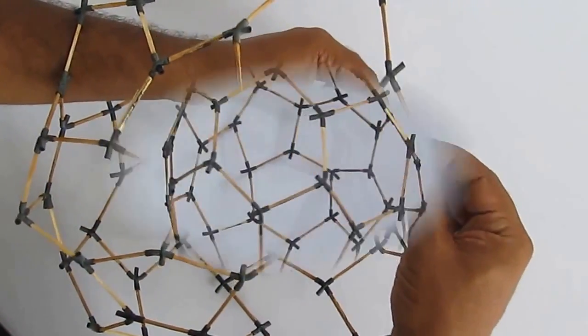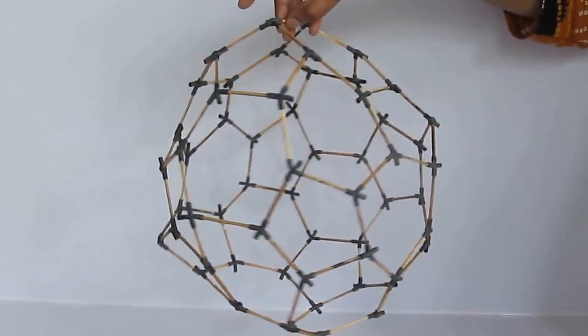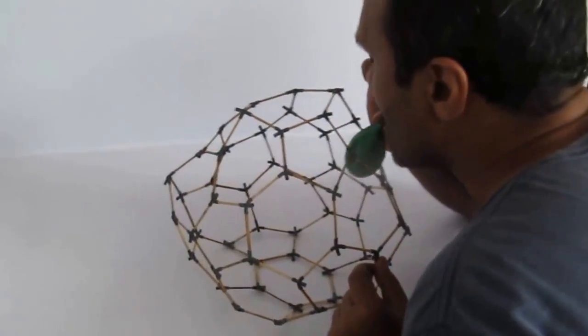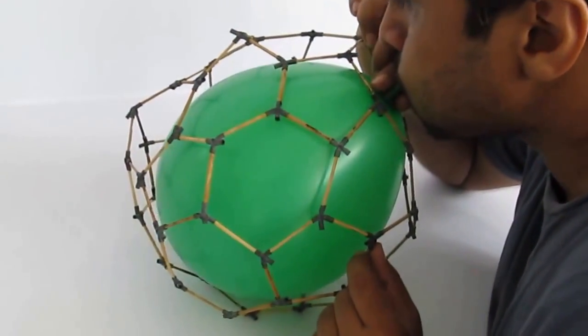And once these 2 structures are joined, the football is ready. This football might not look symmetrical. But once you blow a balloon inside, you can see the amazing symmetrical structure of our football.